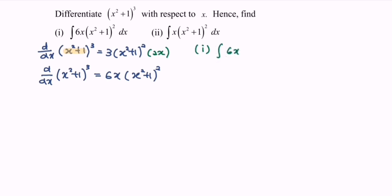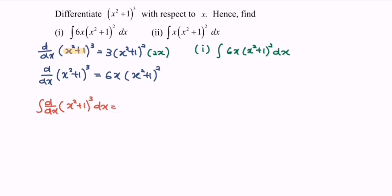Next, focus on number 1: integrate 6x(x² + 1)² with respect to x. Referring to the situation on the left, if we integrate both sides with respect to x, on the right hand side we integrate 6x(x² + 1)² with respect to x. Notice we have the same expression, so integrating the right hand side gives us (x² + 1)³ + C.